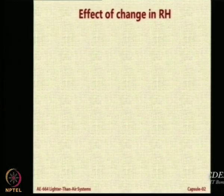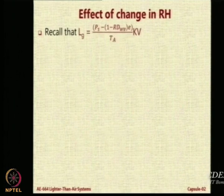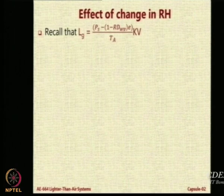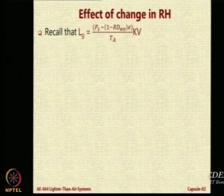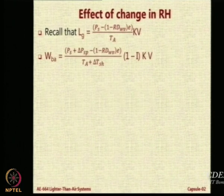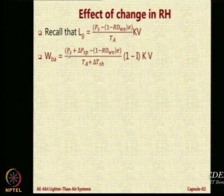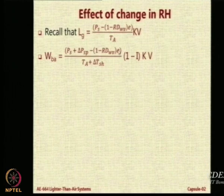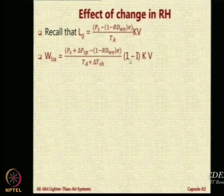Now, we come to the humidity. Let us recall that the gross lift can be expressed in terms of humidity as P_s minus the relative humidity of the wet into E, which takes care of the humidity, into K into V by Ta. The weight of the ballonet air will also have one component where the pressure will first be added by the superpressure, and from that you subtract the contribution because of the relative humidity. But the ballonet air occupies only 1 minus I into V, so you put 1 minus I into V here.